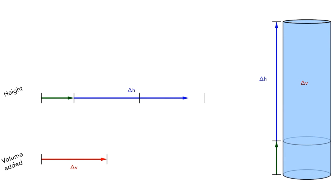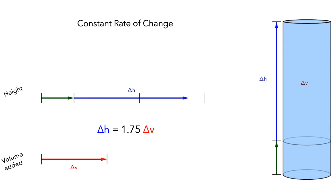It's not the case that the total height of the water was always a fixed multiple of the change in volume, because the cup had some water in it before we started pouring. However, what you might have noticed is that, no matter how large delta V was, delta H was always about 1.75 times as large as delta V. This is what it means to have a constant rate of change.